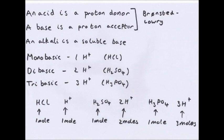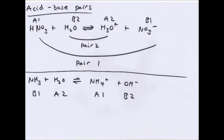Monobasic means that if it fully dissociates it will release one hydrogen ion — HCl splits to H+ and Cl⁻. Dibasic will produce two protons: 2H+ and SO₄²⁻. Tribasic produces three protons: 3H+ and PO₄³⁻. These correspond to hydrochloric acid, sulfuric acid, and phosphoric acid. For example, one mole of sulfuric acid will produce two moles of hydrogen ions.